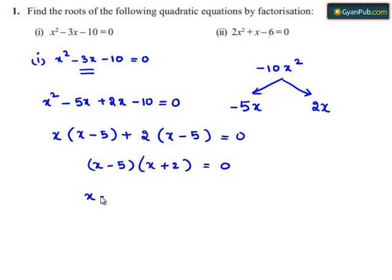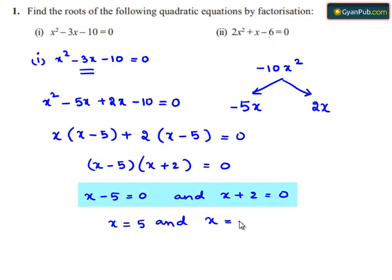We can write x minus 5 is equal to 0 and x plus 2 is equal to 0. x is equal to 5 and x is equal to minus 2.